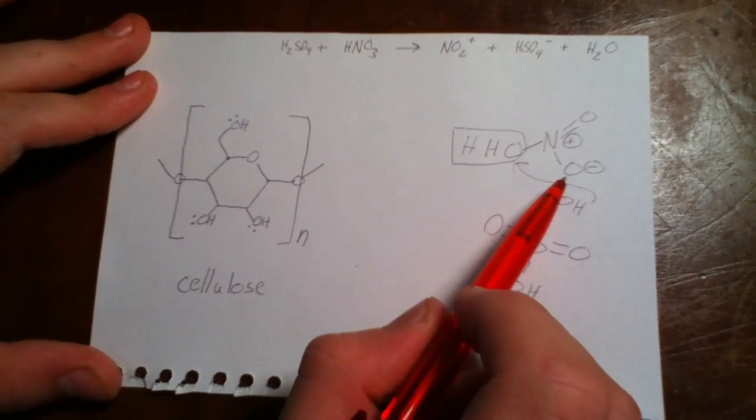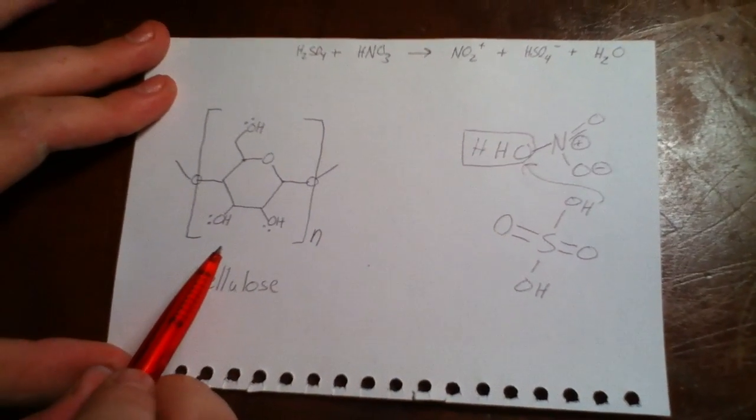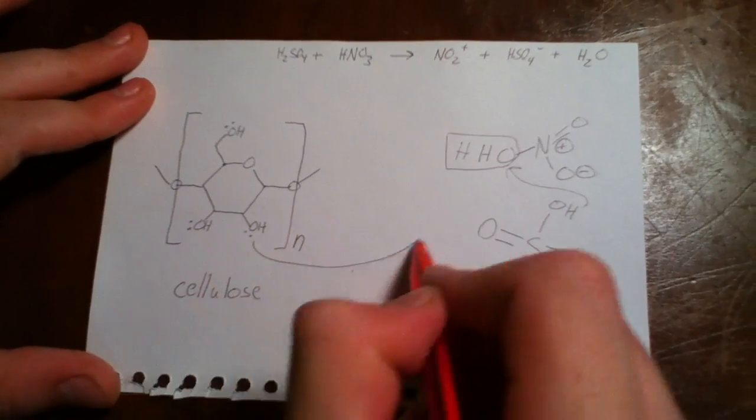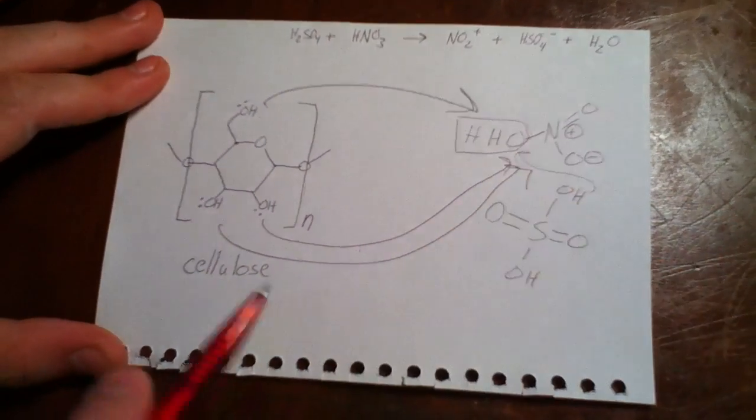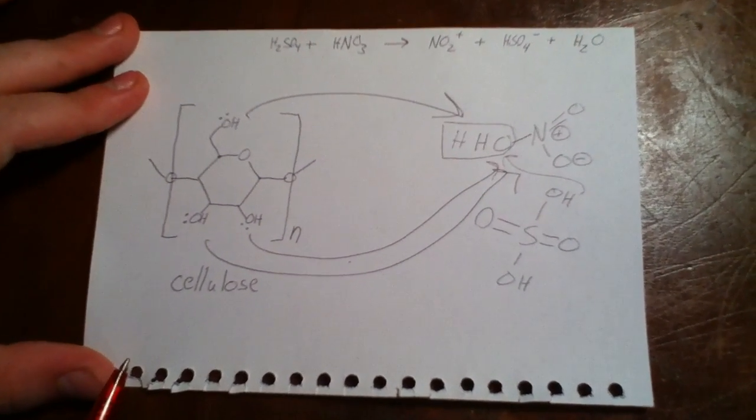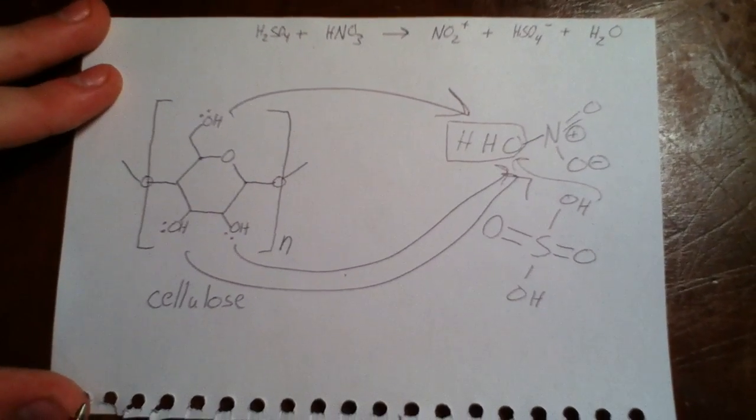The lone pairs on the hydroxyl groups of the cellulose will attack the nitronium ion, giving the triester of cellulose and nitric acid, cellulose nitrate, also known as nitrocellulose.